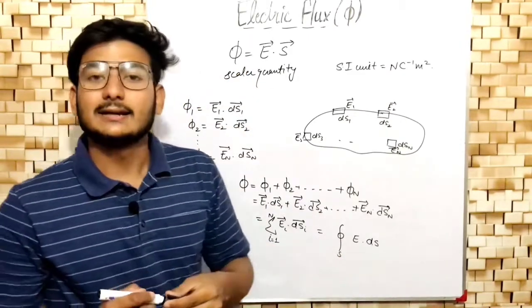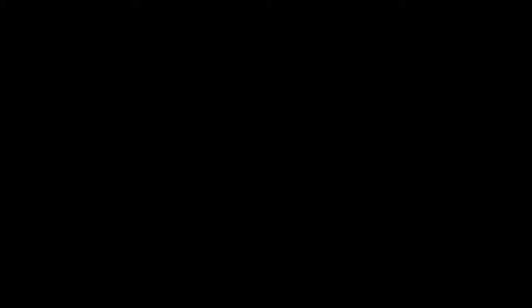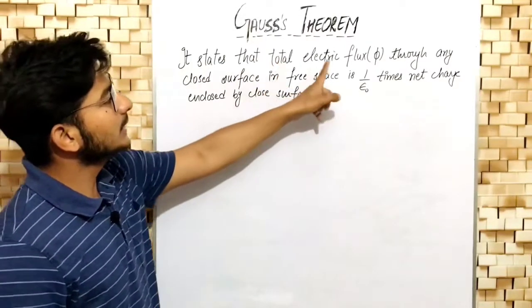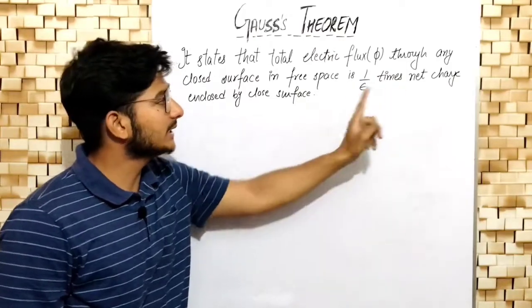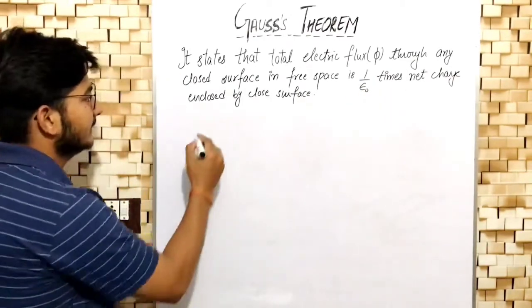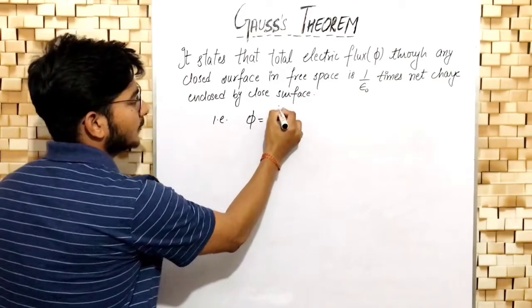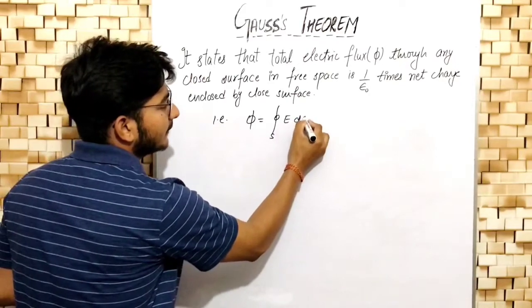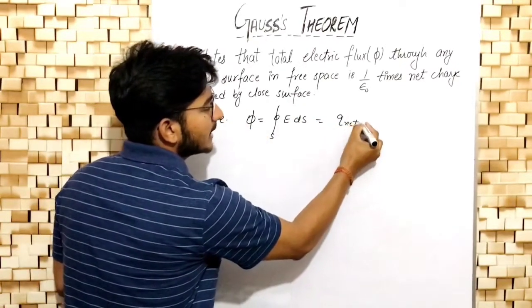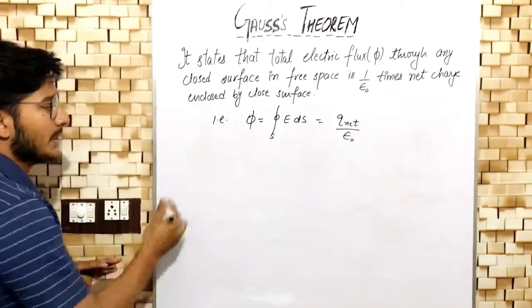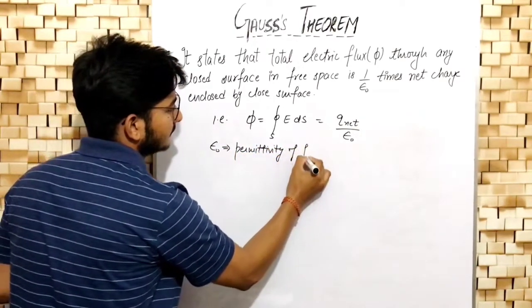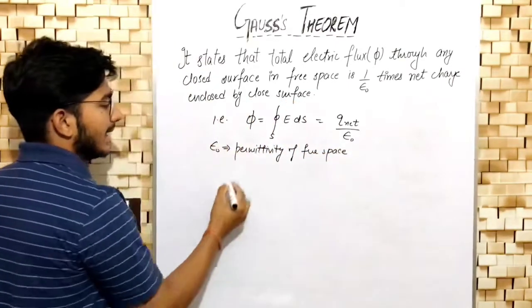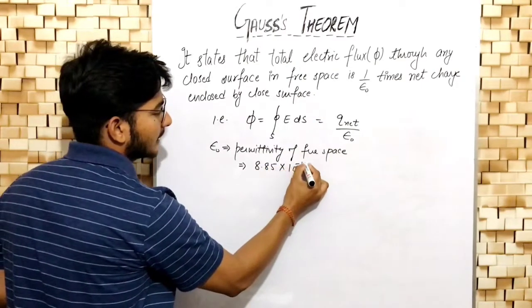Now let's move on to our very important topic: Gauss law. According to Gauss theorem, the total electric flux through any closed surface in free space is (1/ε₀) times the net charge enclosed by that surface. That is, flux = surface integral of electric field = Q_net / ε₀, where ε₀ is the permittivity of free space with standard value 8.85 × 10⁻¹² C²/N·m².